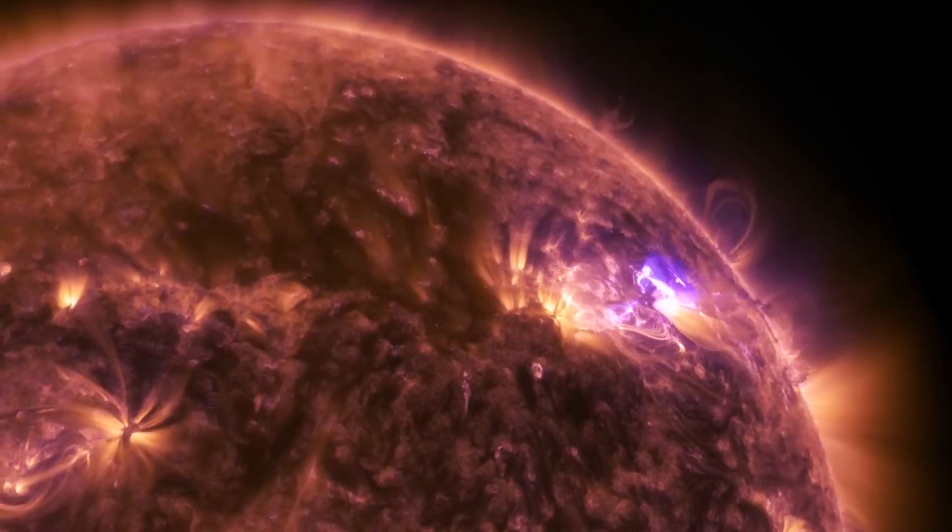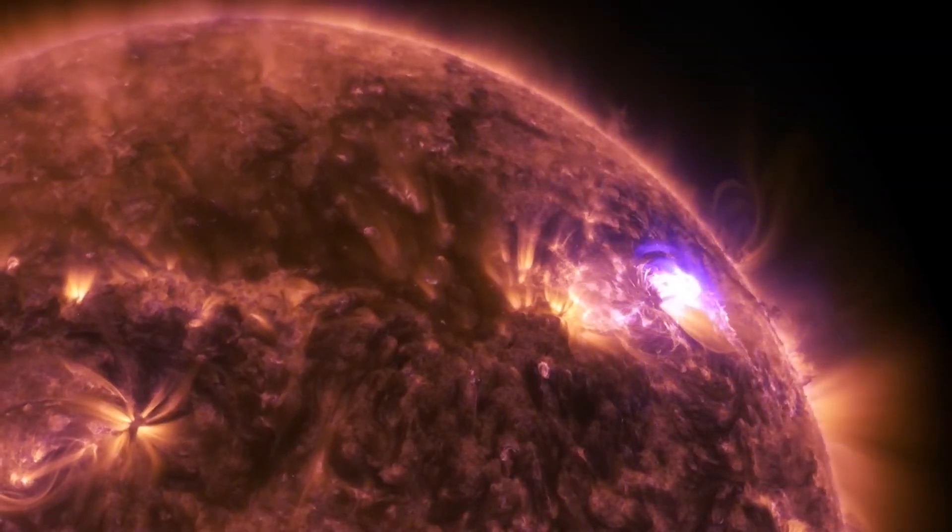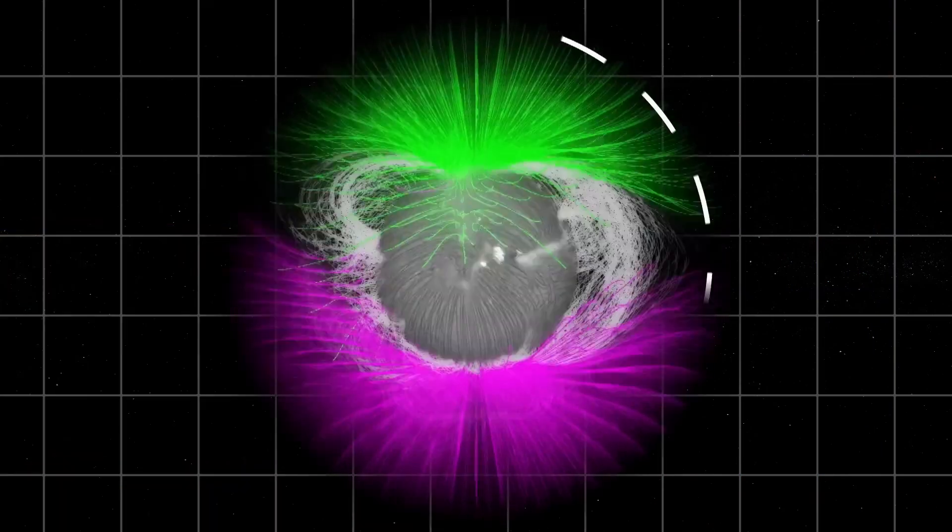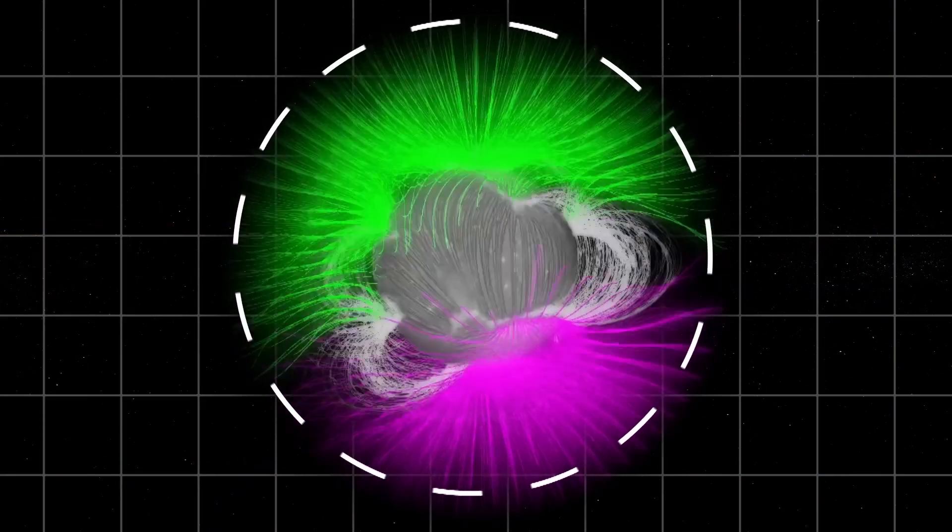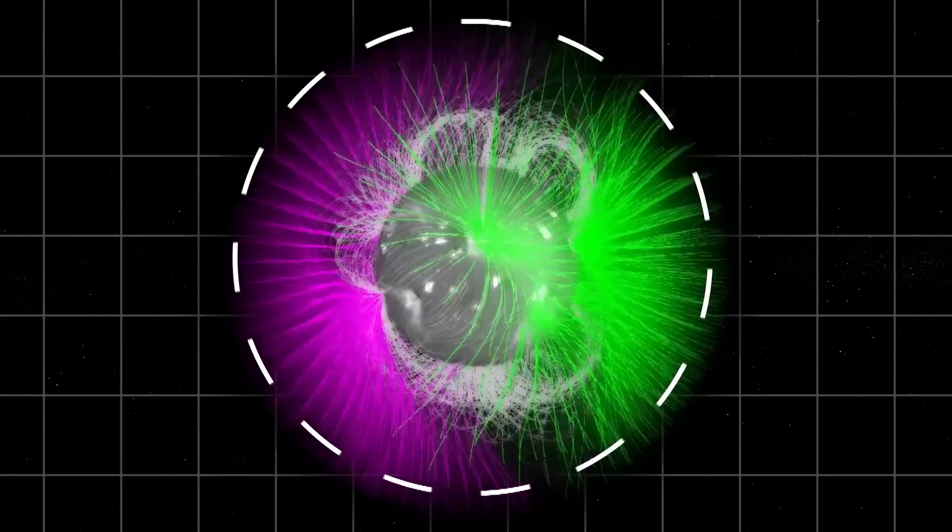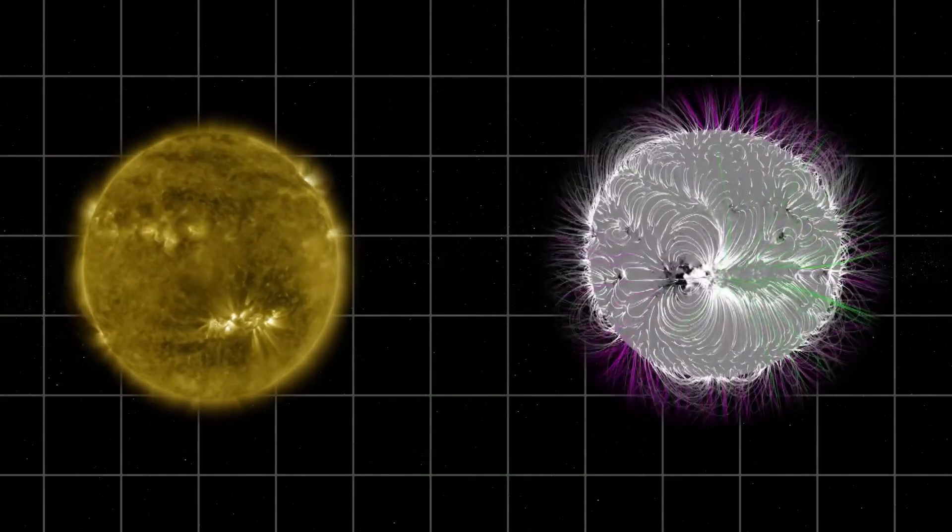Imagine a force so powerful that it flips the sun's magnetic poles upside down every 11 years. But here's the real kicker. When this cosmic flip happens, it doesn't just stay in space.